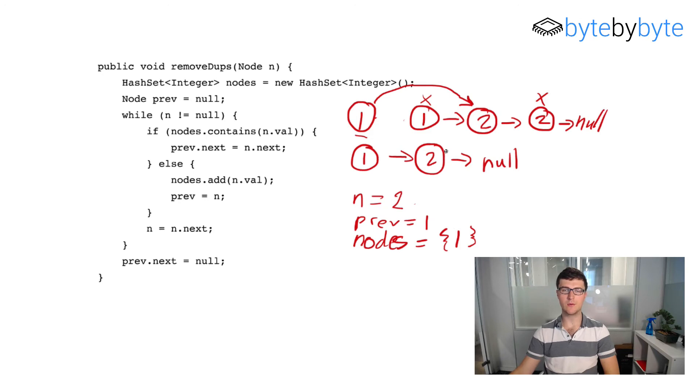And notice that we didn't increment prev in this case. And we don't actually want to increment prev because the previous value for our new linked list with this second node removed is still going to be the same previous node as before. So correctly we don't want to say prev is equal to n in this case.